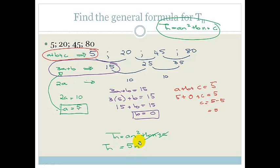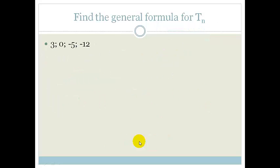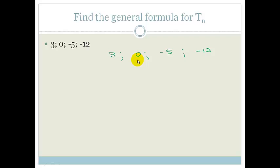To make sure you really understand this, let's do a couple more examples. This time we've got 3, 0, minus 5, and minus 12. Let me write these out with more space: 3, 0, minus 5, minus 12.